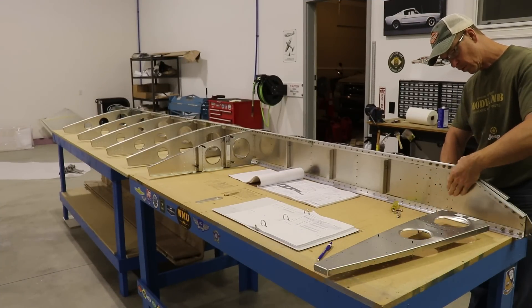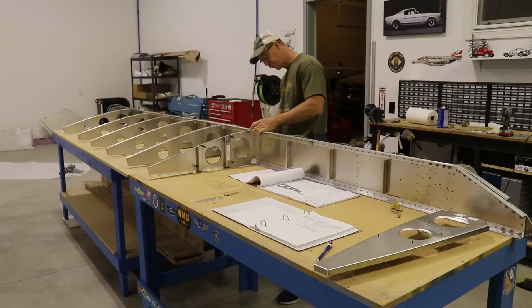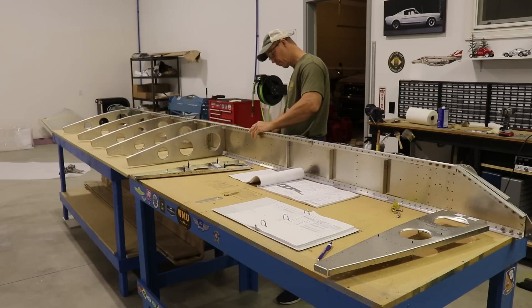With all of the front ribs and rear ribs clecoed to the spars, everything fits great. So now it's time to take it all apart, prep the parts for primer where the mating surfaces touch and then it'll be ready to rivet them together.